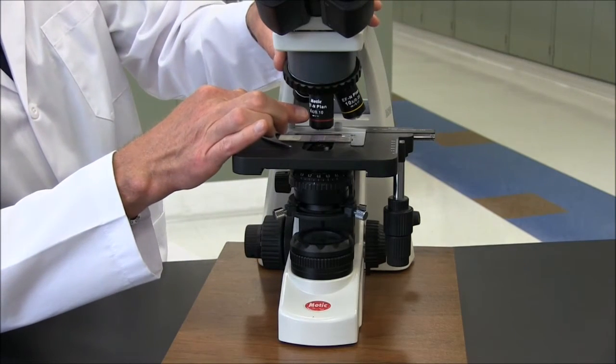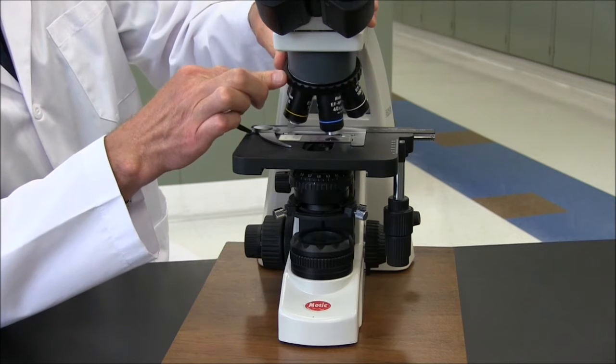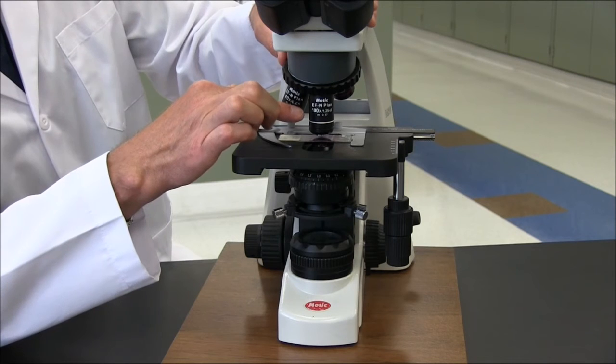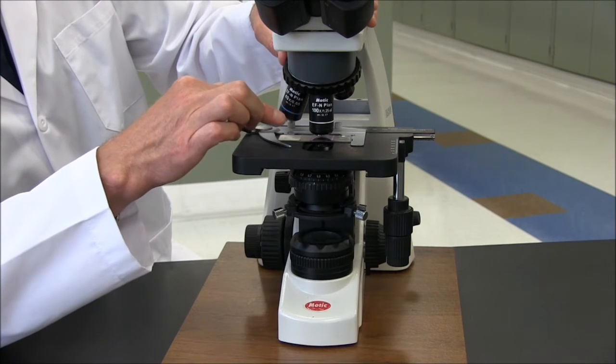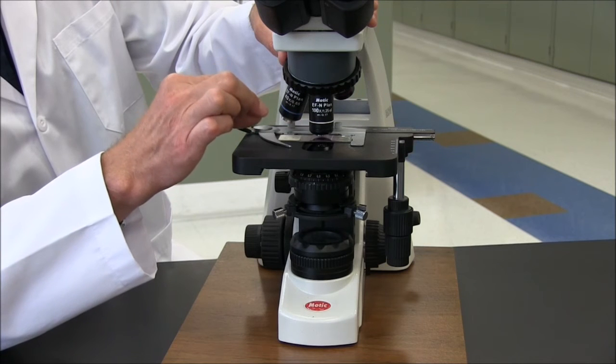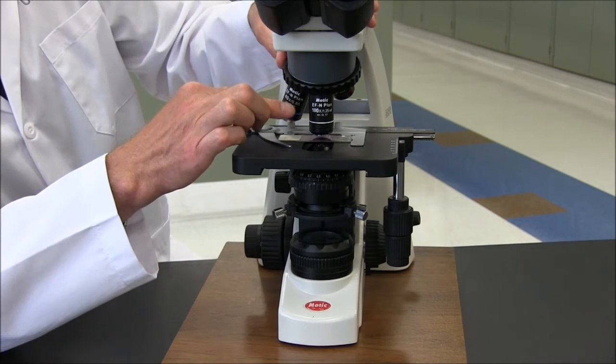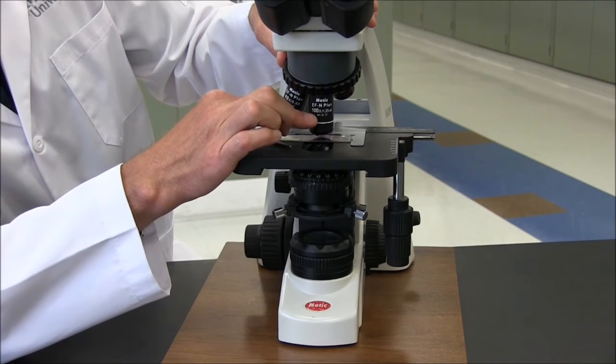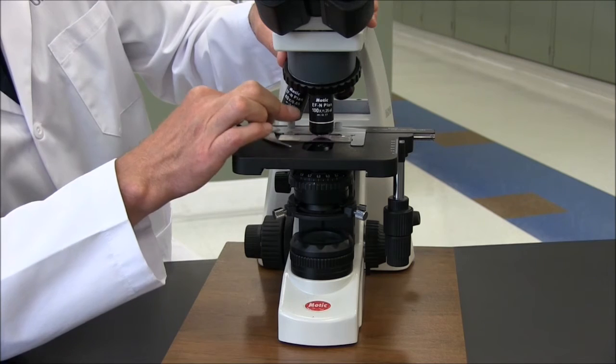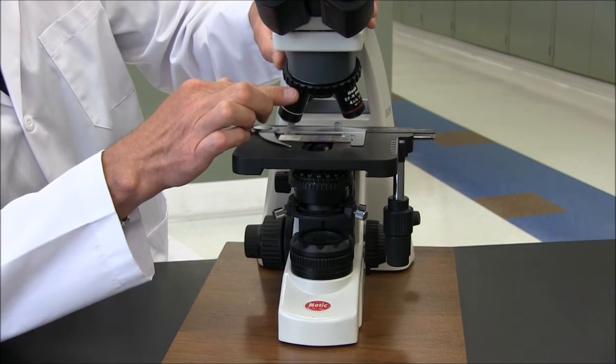These are the objectives. In this microscope, there's a 4x, 10x, 40x, and a 100x objective. This is an oil objective because the focal distance between the slide and the objective is so small, you'll need a thin layer of oil in order to see it properly. You can always tell an oil objective because it will either say oil right on it, or it will have a black line that you can see here indicating that you need oil. There's also space for one more objective in here.